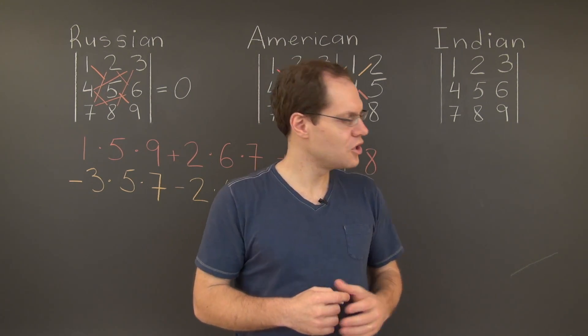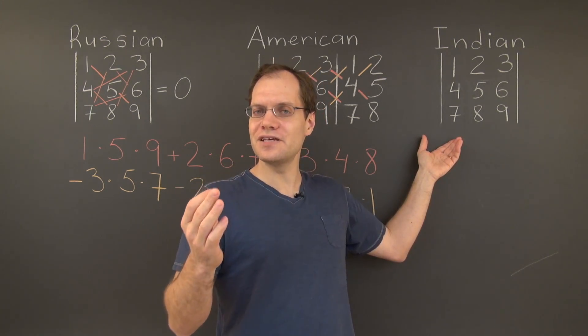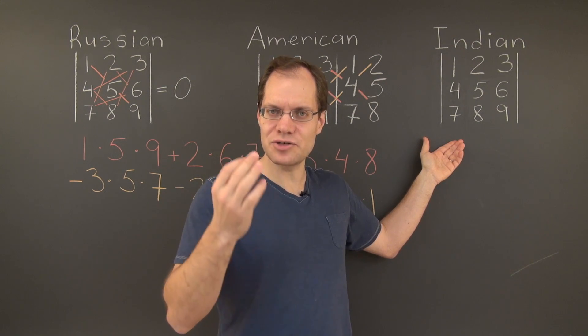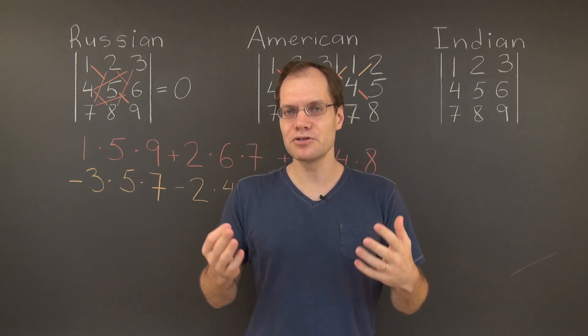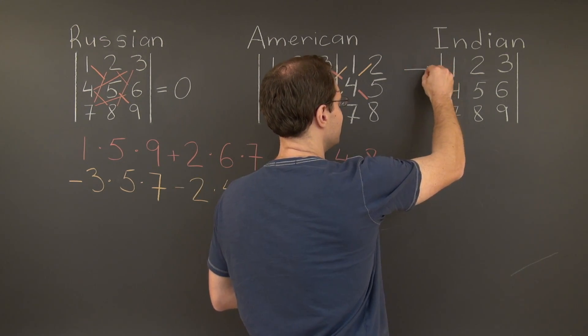When you take the Indian approach, you single out a particular row or column, and for the sake of this video let's say row, and corresponding to each entry in that row, there is a term which includes a simple 2x2 determinant. For example, let's single out the first row in this case.